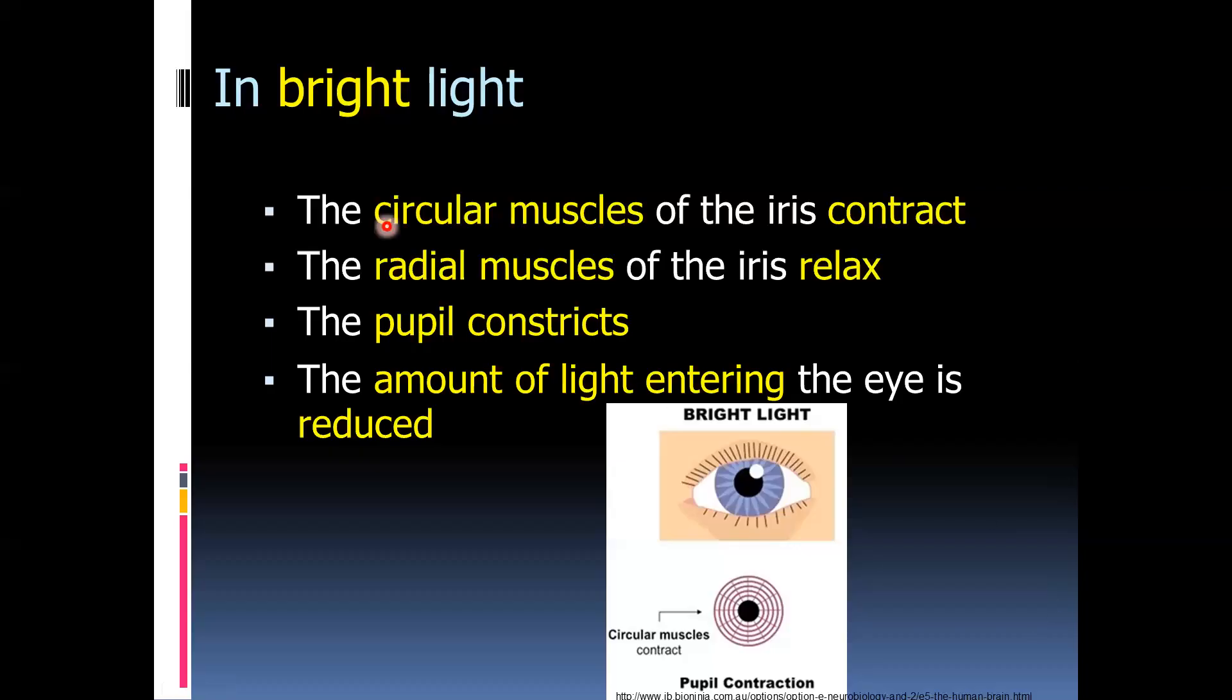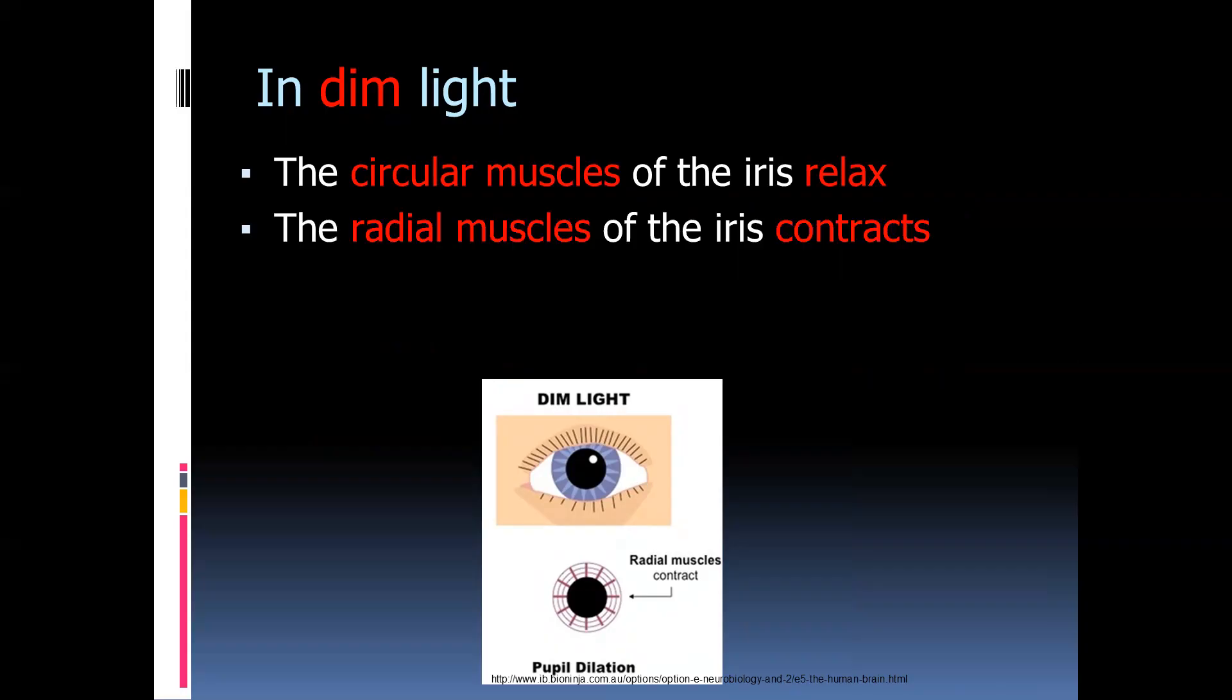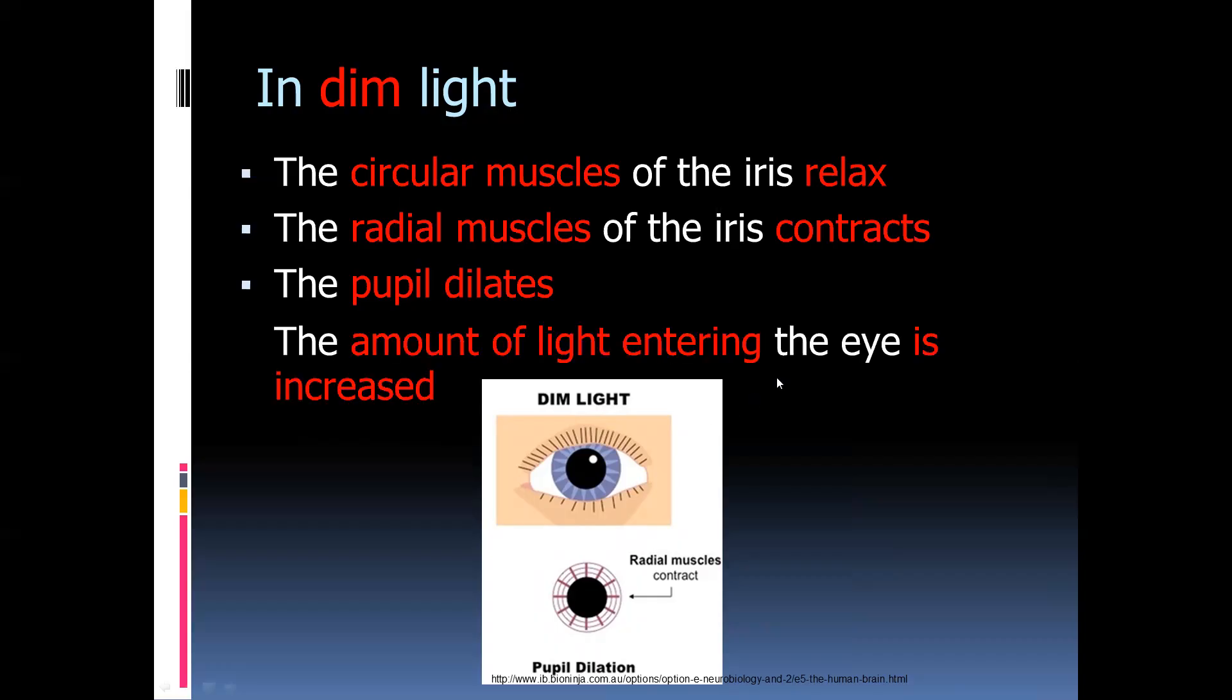Be very careful because often learners confuse ciliary muscles and circular muscles. The ciliary muscles are joined to the suspensory ligaments and play a role in accommodation, whereas the circular muscles are to do with the size of the pupil. In dim light conditions, the opposite occurs. The circular muscles of the iris relax while the radial muscles contract. As a result, the pupil dilates. If it's dilated, more light can enter into the eye, and a person will be able to see in conditions of dim light.